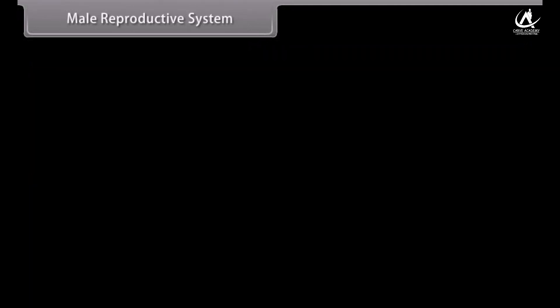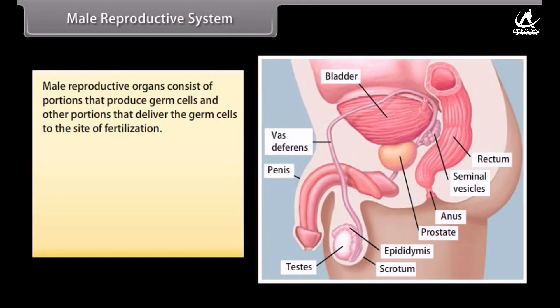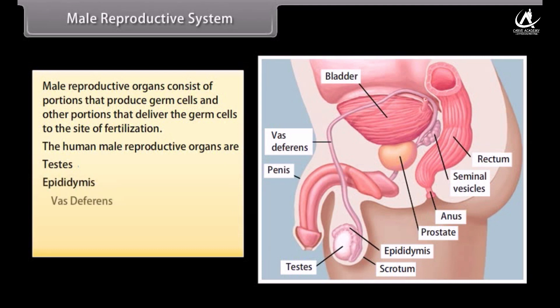The male reproductive system consists of portions that produce germ cells and other portions that deliver germ cells to the site of fertilization. The human male reproductive organs are: testes, epididymis, vas deferens, urethra, and penis.